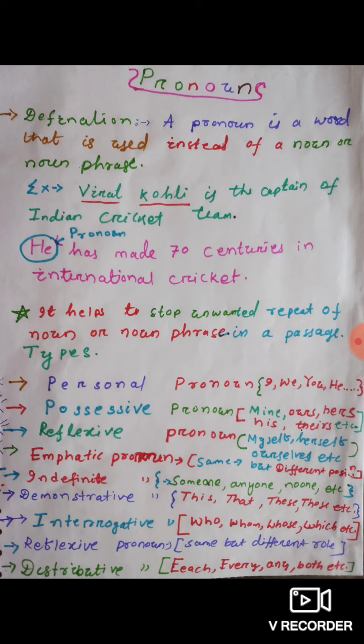Here an example is given. Virat Kohli is the captain of our Indian cricket team, and he has made 70 centuries in international cricket. Here 'he' is the pronoun — it takes the place of Virat Kohli. So I think you understood well. Let's move ahead towards the types of pronouns.